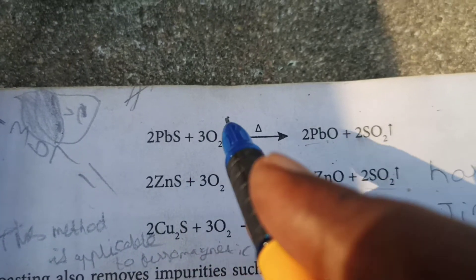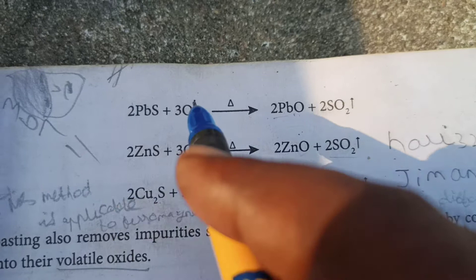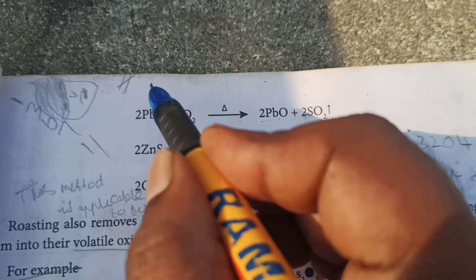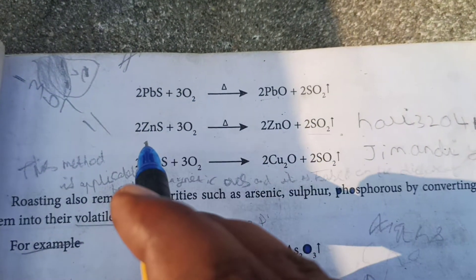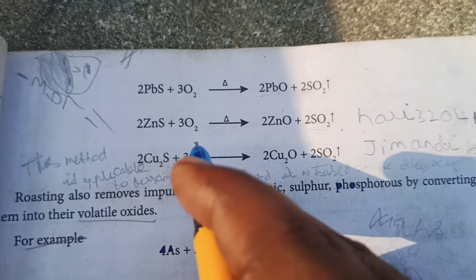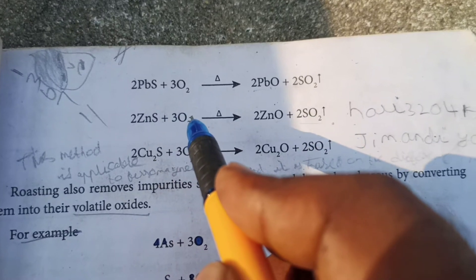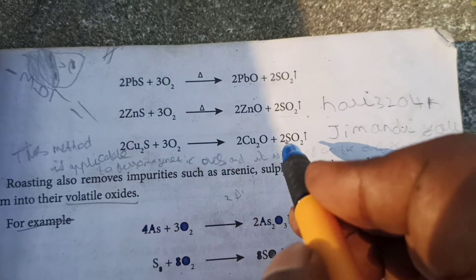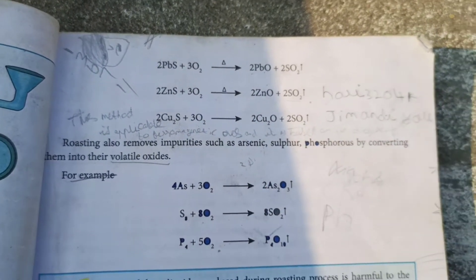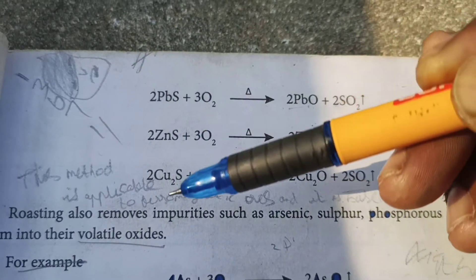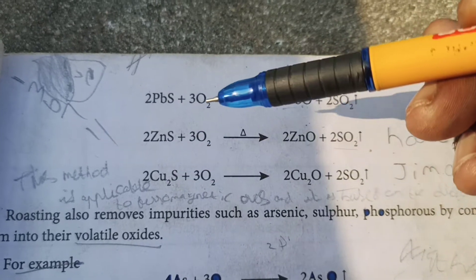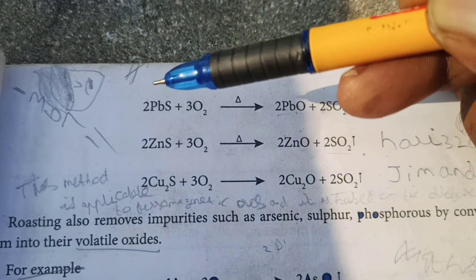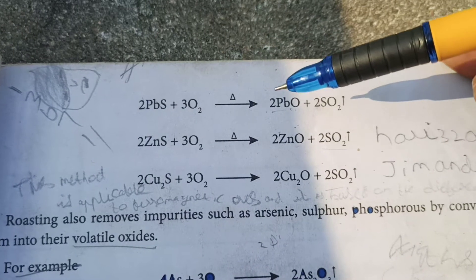For example: Lead sulfide plus excess oxygen gives lead oxide plus sulfur dioxide. Zinc sulfide plus 3O₂ gives zinc oxide plus SO₂. Cu₂S plus 3O₂ gives Cu₂O plus SO₂. So the sulfide ores — lead sulfide, zinc sulfide, copper sulfide — react with excess oxygen to give their corresponding metal oxides.